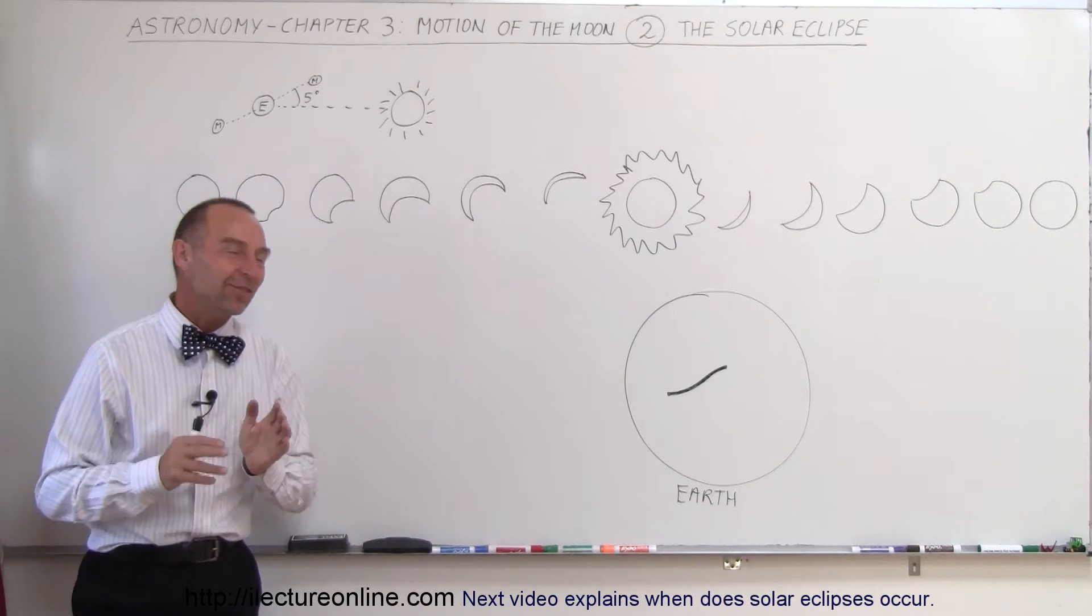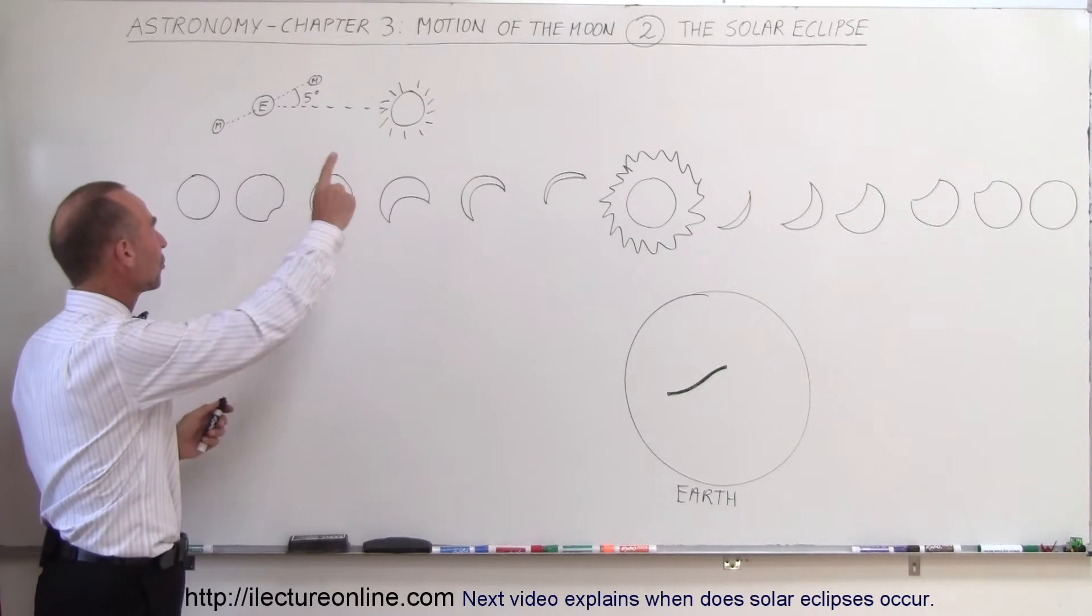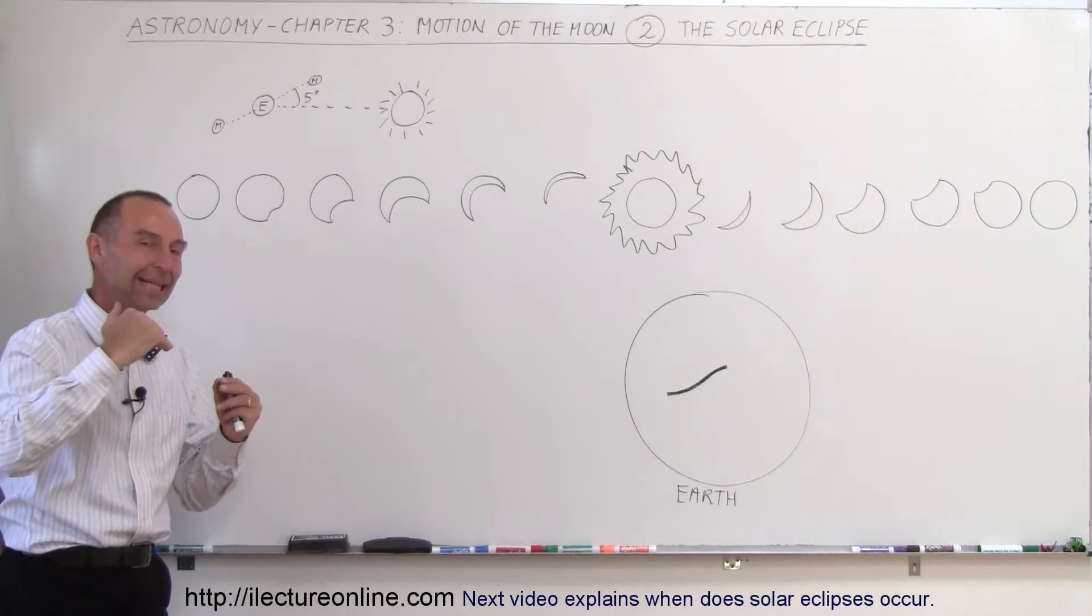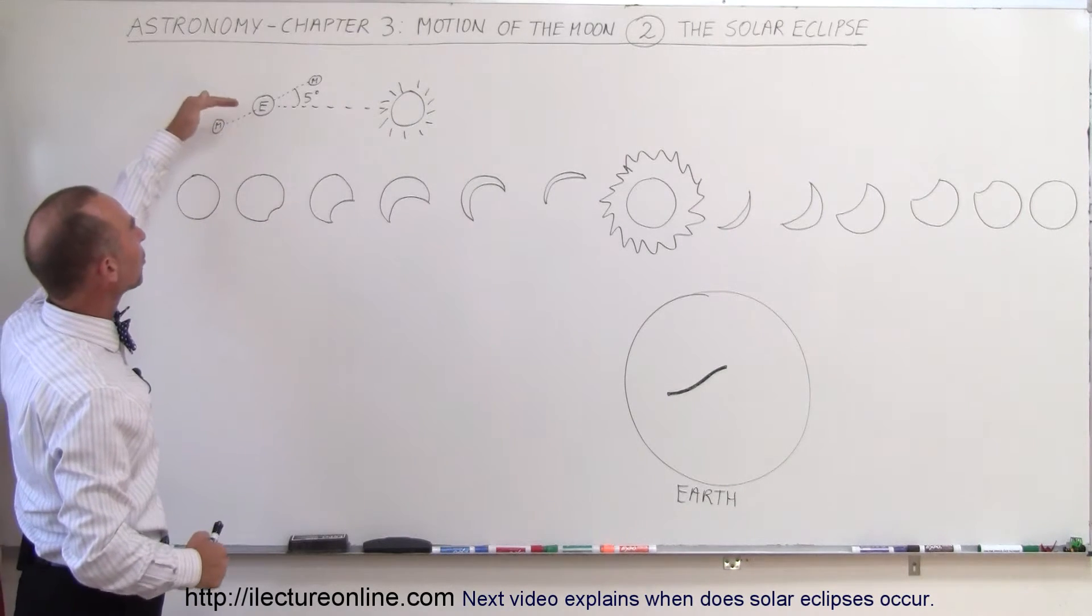Welcome to Lecture Online. We realize now that the Moon travels around the Earth in a plane that's different from the ecliptic plane between the Earth and the Sun.